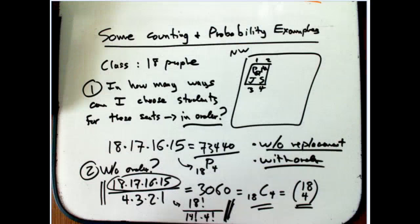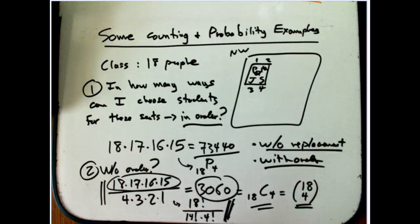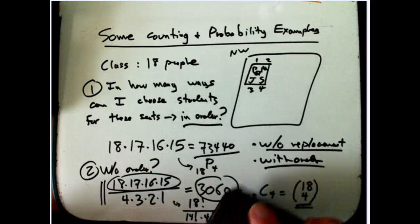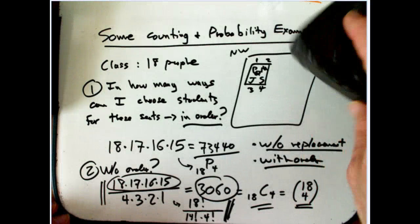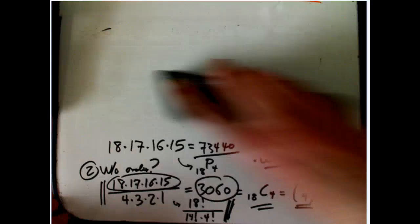And notice this is a much smaller number. It's still a lot of different ways to pick those, or to choose those folks, but it's not nearly as big as this.